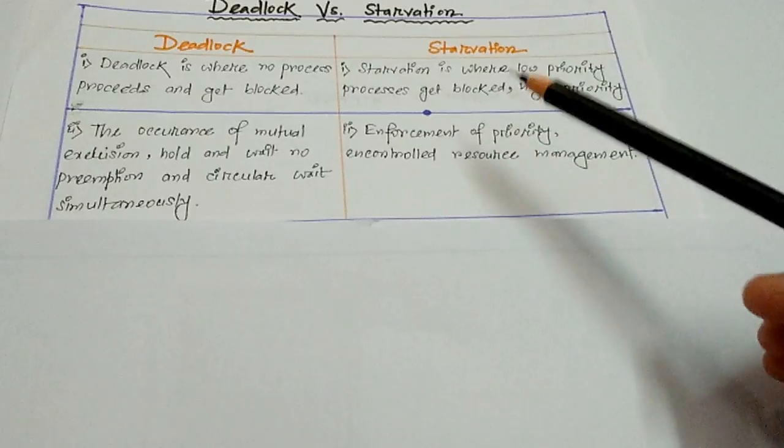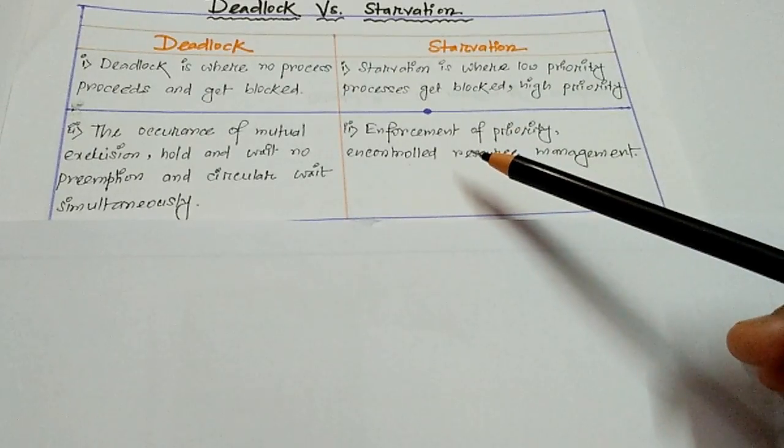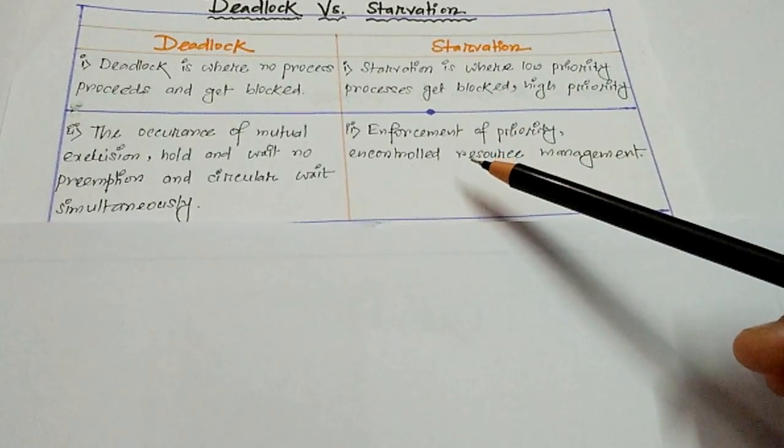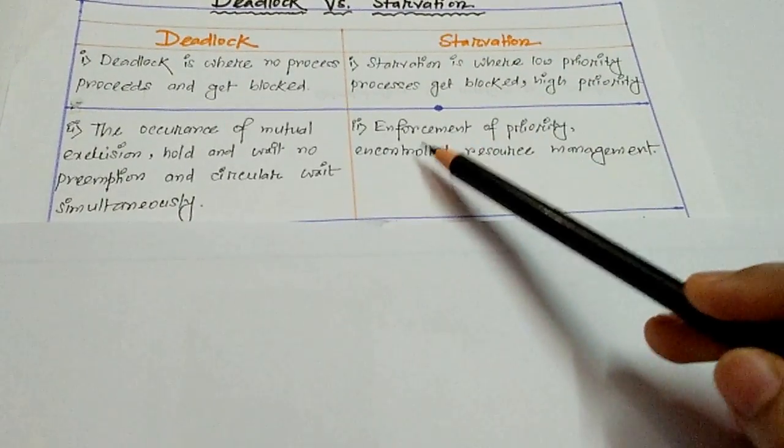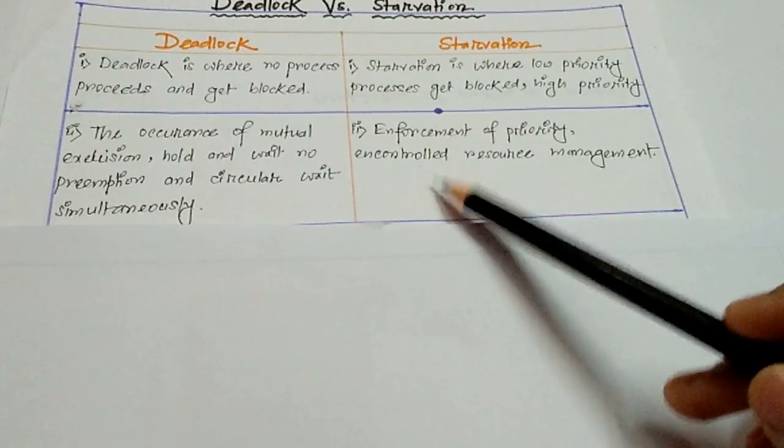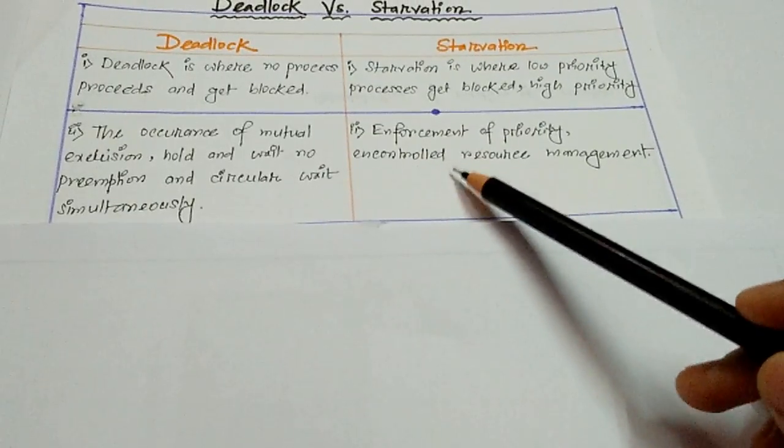The second point is the occurrence of mutual exclusion, hold and wait, no preemption, and circular wait simultaneously in deadlock. In starvation, what happens is enforcement of priority in controlled resource management.